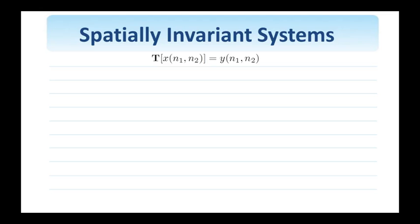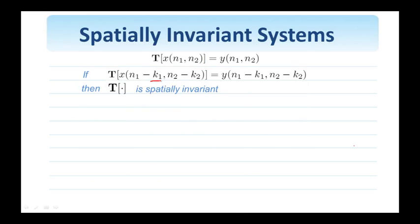Let us consider again a two-dimensional system T. x(n1, n2) is the input, y(n1, n2) the output. For such a system, if when I shift the input by k1, k2, I find that the output is shifted by the same amounts k1, k2, then the system is spatially invariant. Another way to express this is to say that the system does not care about the location of the axis, does not care where the (0,0) point is located. This property is important by itself, but even more important when combined with linearity, as we're going to see right away.